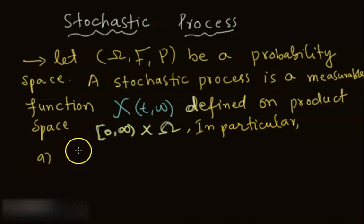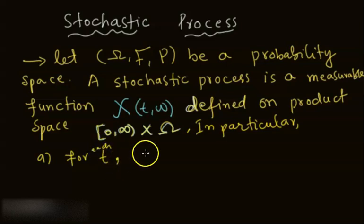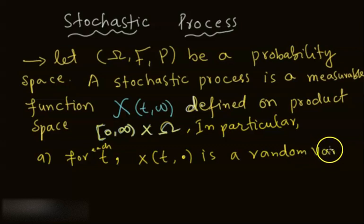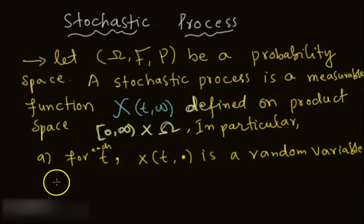In particular, for each time t, X(t, ω) is a random variable. So if you fix t, then it will only depend on ω. In that case it will behave like a random variable — you give input as an ω and it will give you a random output.